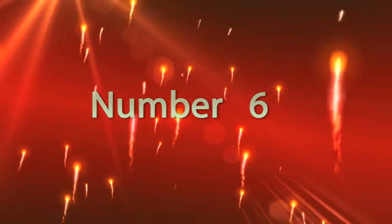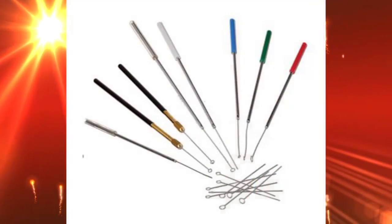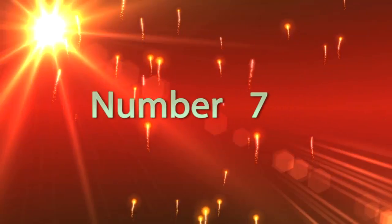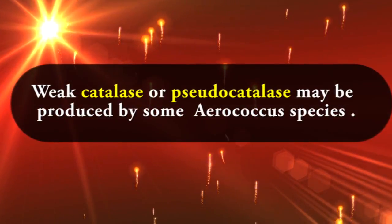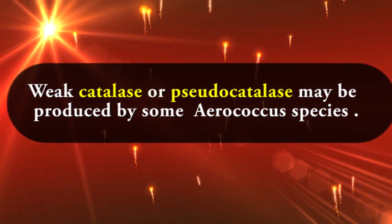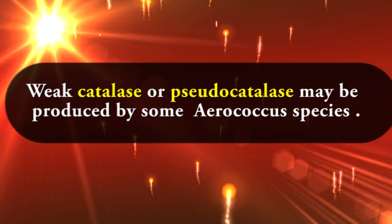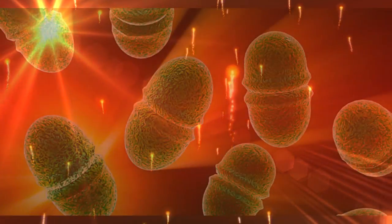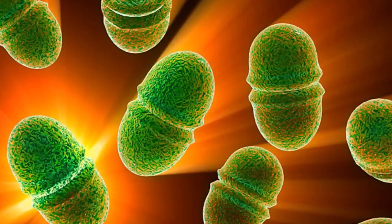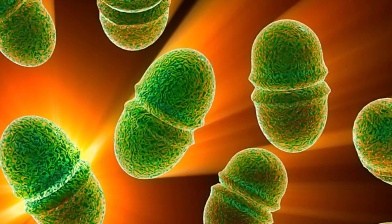Limitation Number 6: Some inoculating loops or wires can react with the hydrogen peroxide to produce false positive reactions. Limitation Number 7: A weak catalase or pseudocatalase reaction may be produced by some strains of Aerococcus species, and some strains of Enterococcus species also produce a pseudocatalase.